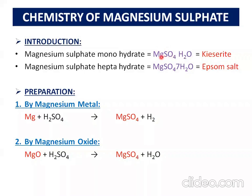Magnesium sulfate can be found naturally with or without water molecules. If magnesium sulfate has one water molecule, we call it magnesium sulfate monohydrate. Monohydrate means one water molecule.